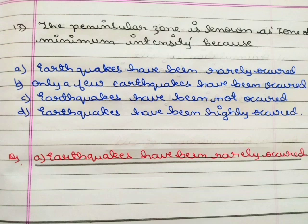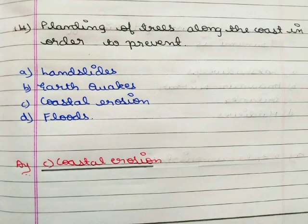Next question: the peninsular zone is known as the zone of minimum intensity because option A earthquakes have been rarely occurred, option B only a few earthquakes have occurred, option C earthquakes have not occurred, option D earthquakes have been highly occurred. The correct answer is option A earthquakes have been rarely occurred.